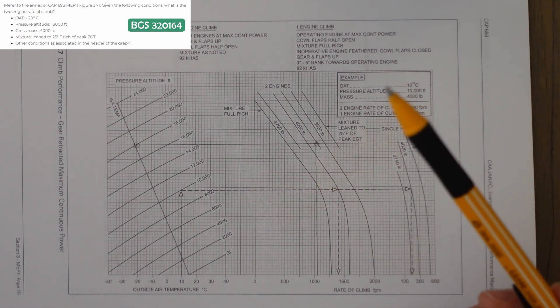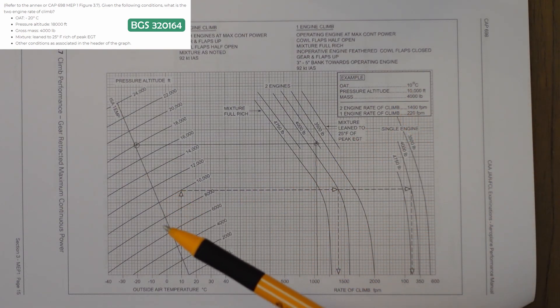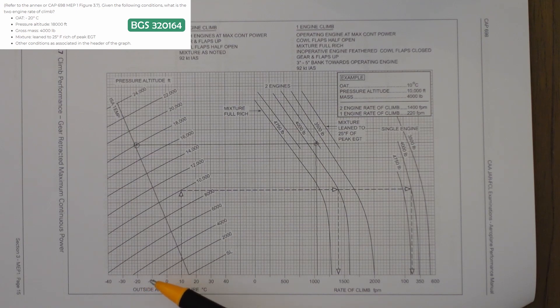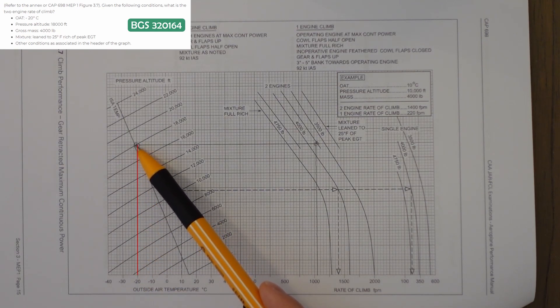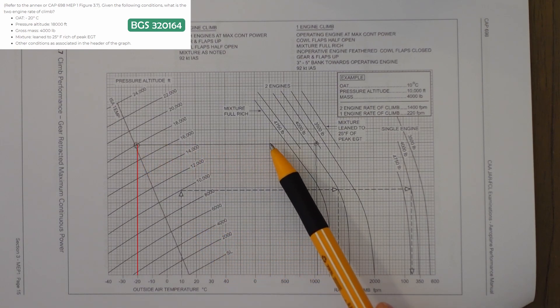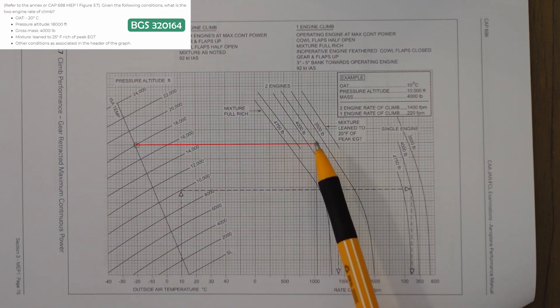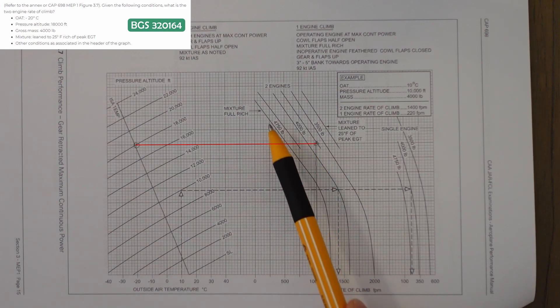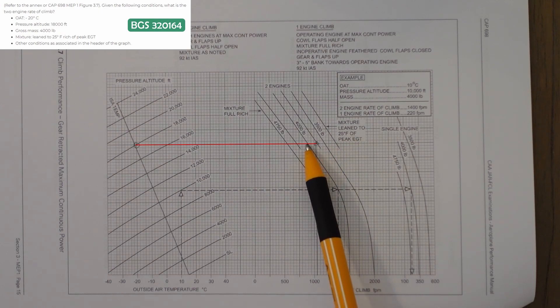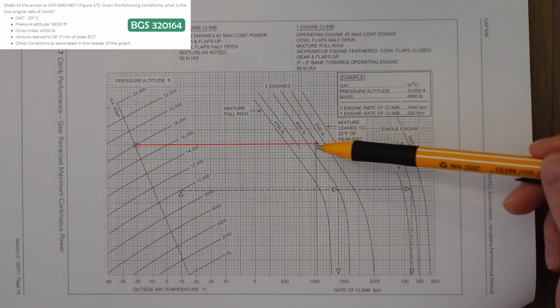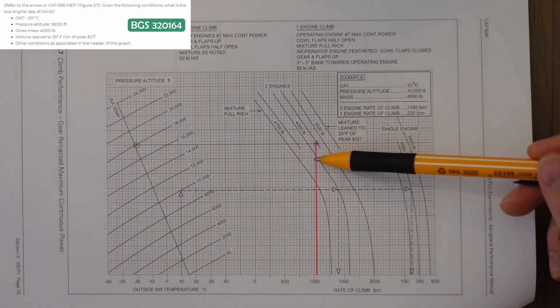First thing we do, temperature and pressure altitude. Temperature of minus 20, pressure altitude 18,000 feet, goes up to this line and then we go straight across. There's about six lines here. We're going to the 4,000 pound line, and the line that is on the right hand side is the mixture being leaned. So we're going to the right hand side line of the 4,000 pound bracket.